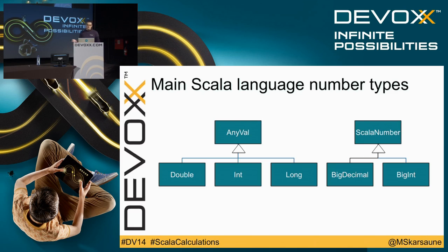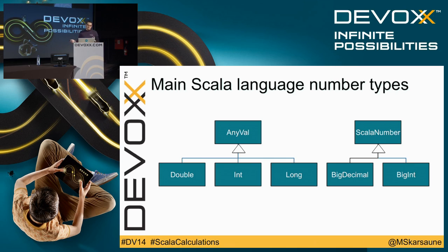At first sight, the Scala type model looks more or less like Java. I've put up the main types. You have some basic primitive types and some more complex types in separate places. We'll see what Scala does to overcome this divide.